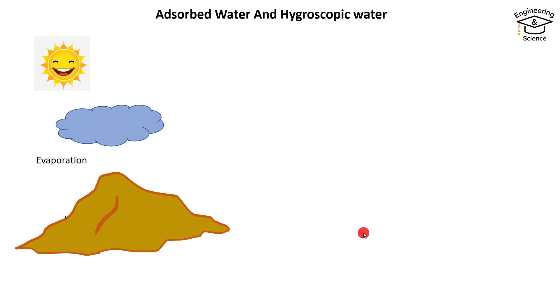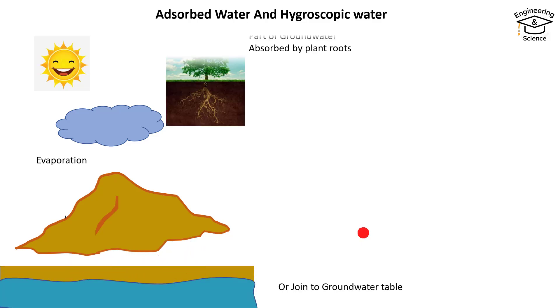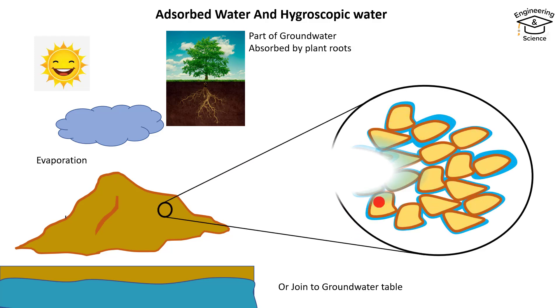Or maybe the water joins the groundwater table, or maybe a part of water is absorbed by the plant roots. If we look in detail, still a part of water sticks strongly around the soil particles. Let's see why this phenomenon is happening.